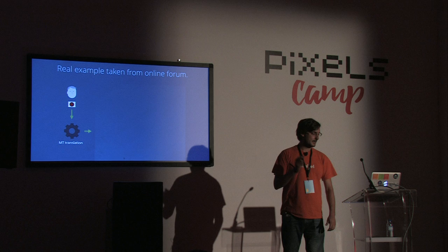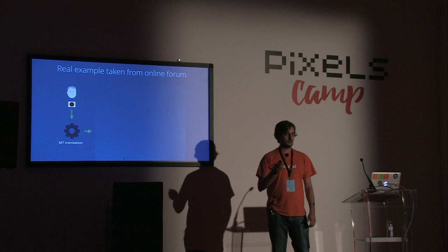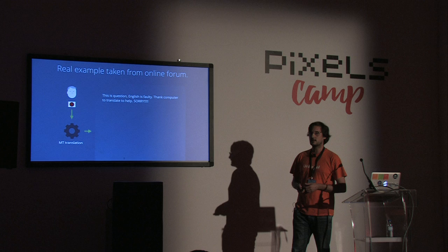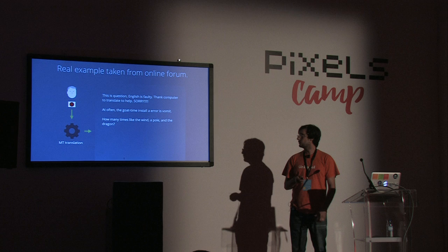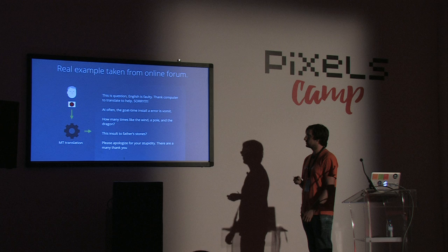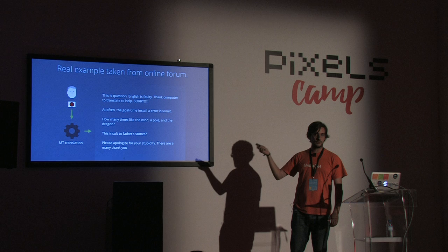This is an actual example taken from a JavaScript blog where a user in Japanese is using Google Translate to communicate with the blog. This is a hand-picked bad example — not everything is this bad. But this is what it says: 'English is faulty. Thank computer to translate to help. Sorry. And often the go-time installer error is vomit. How many times, the wind, the pole, and the dragon? The insult to father stones. Please apologize for your stupidity. There are many. Thank you.' This came out of the translation system, and I assume none of you would send this to a customer.